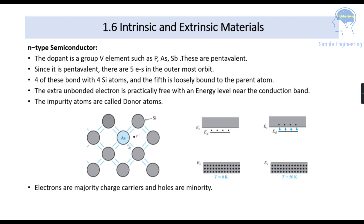In this figure you can see arsenic — the blue colored one — which is a pentavalent dopant added into the semiconductor, surrounded by silicon atoms. Arsenic has five electrons in its valence shell and silicon has four, so arsenic bonds with four silicon atoms and the fifth electron is free. At zero Kelvin you can see the valence band, the conduction band, and the donor atom energy level. When the temperature starts increasing, these donor atoms excite to the conduction band — at around 50 Kelvin they excite fully. So electrons are the majority carriers and holes are the minority carriers in N-type.